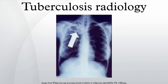In active pulmonary TB, infiltrates or consolidations and/or cavities are often seen in the upper lungs, with or without mediastinal or hilar lymphadenopathy. However, lesions may appear anywhere in the lungs. In HIV and other immunosuppressed persons, any abnormality may indicate TB, or the chest X-ray may even appear entirely normal.